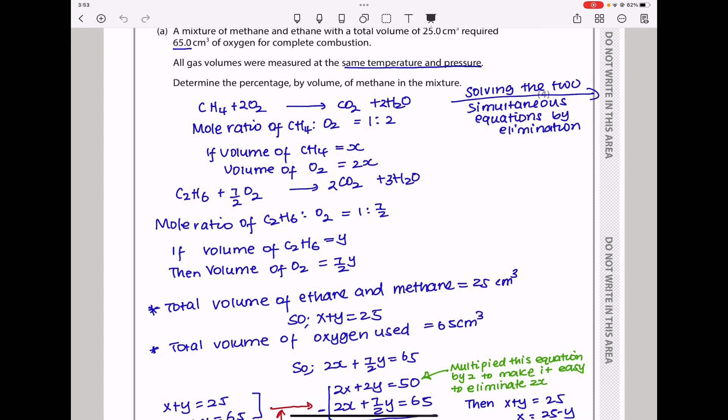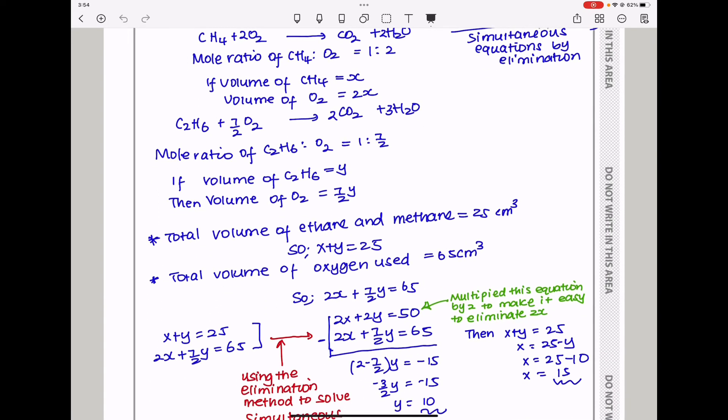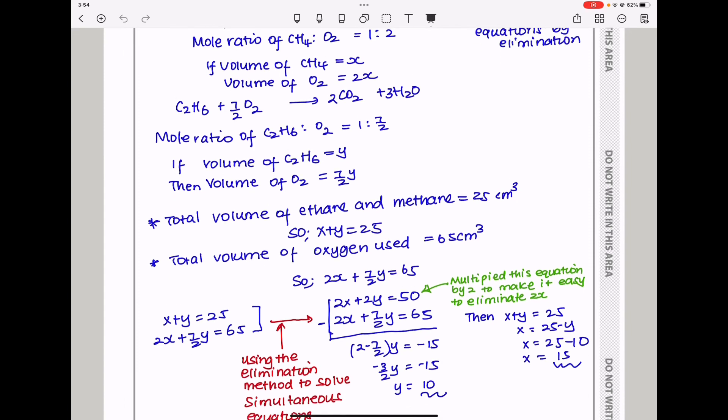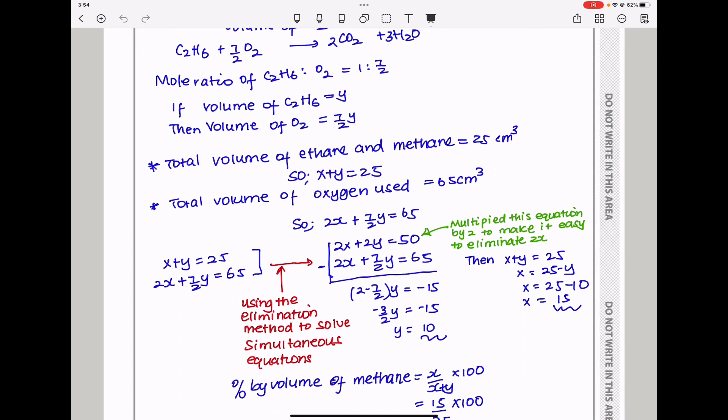Solving these simultaneous equations by elimination: I multiply this equation by 2 to subtract and get zero. This multiplied by 2 gives 2X + 2Y = 50. Using elimination method, subtract: this becomes 0, but this becomes 2Y - 7/2Y = 50 - 65. In the end, -3/2Y = -15 and Y = 10.